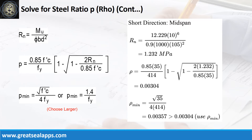Short direction, mid-span: moment equals 12.229 kN·m/m. Resistance factor equals 0.9. b equals 1,000 mm. d equals 105 mm. The beam design ratio RN equals 1.232 MPa. Reinforcement ratio ρ equals 0.00304. Use ρ minimum of 0.00357.